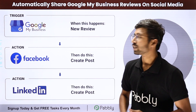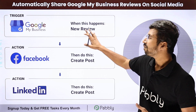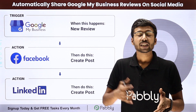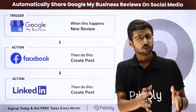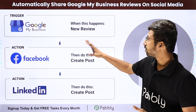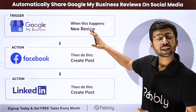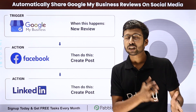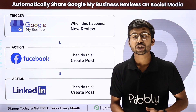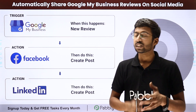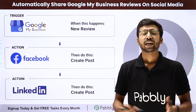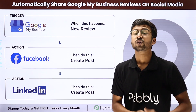In this automation, whenever we get a review we will check what the rating of that review is. For example, we can set up this automation for four-star and five-star reviews. Using this automation, we first filter reviews, and whenever we get a four-star or five-star review we will automatically share those review details on our social media platforms like Facebook, LinkedIn, and Instagram as a new post.